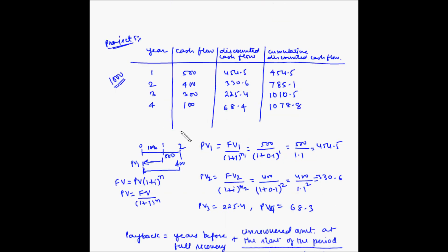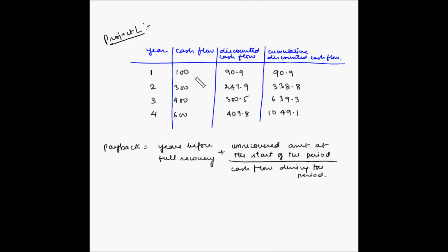For Project S, the discounted payback period is 2.95 years. Now let's do the same calculation for Project L. On the screen I have noted the cash flows for Project L received at the end of each of the four years, the discounted cash flow for each year at a 10 percent discount rate, and the cumulative discounted cash flow.